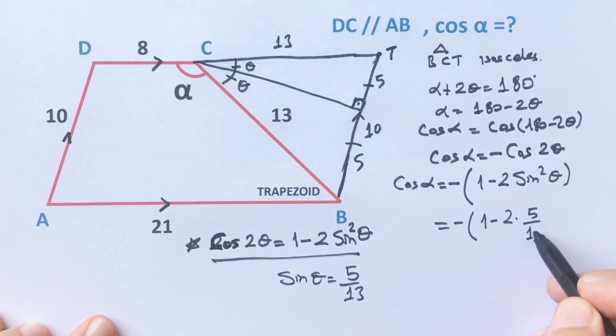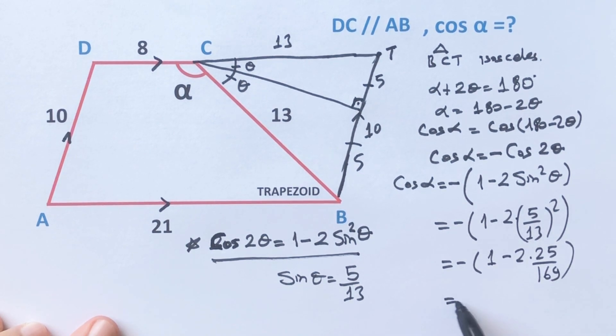5 over 13, so 5 over 13 whole squared. Therefore, 1 minus 2 times 25 over 169. So cosine alpha equals minus 119 over 169.